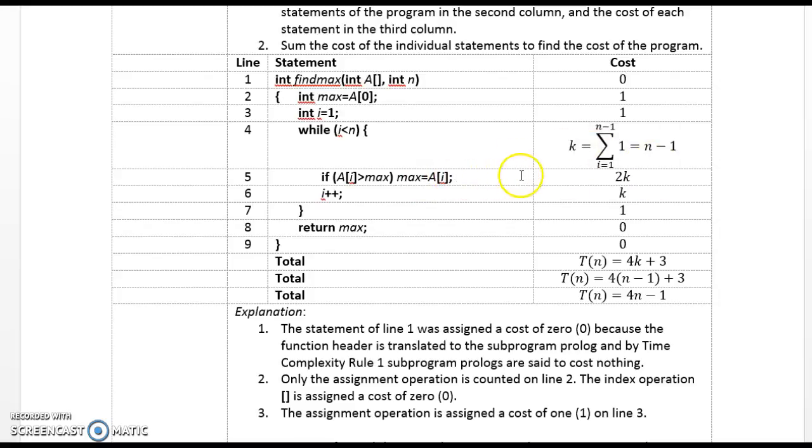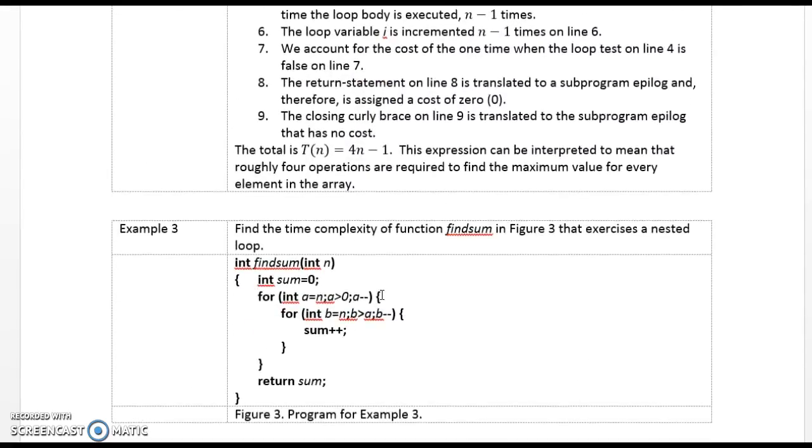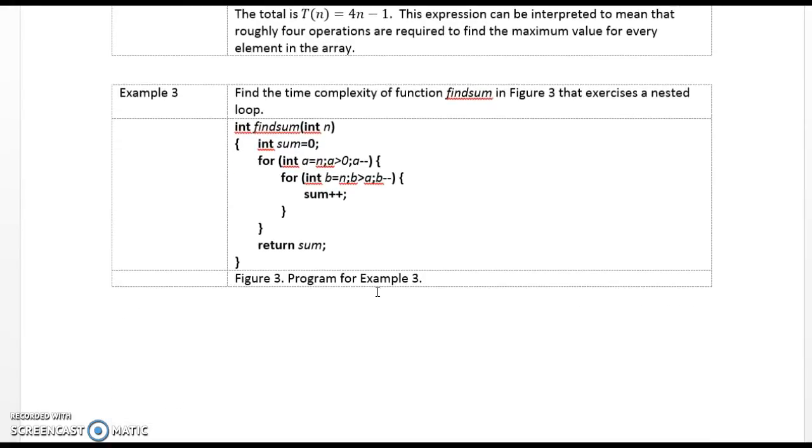Then we look at the if statement. If a of i is greater than max, there's one comparison there, then max is assigned a of i. So there are two operations there. They are the greater than and the assignment. So what we need to do is we need to assume that both operations are executed every time for the worst case. And since we know that this statement is executed k times, because that's how many times i is less than n, we can assign a cost of 2k to this. Similarly, when we increment i, that also happens k times, we exit the loop once, to return max costs nothing, and we compute here at the end that t of n is equal to 4n minus 1.